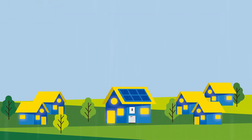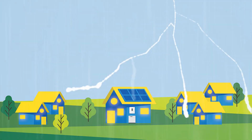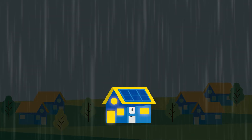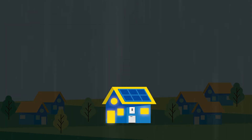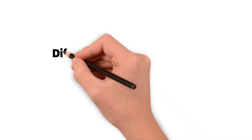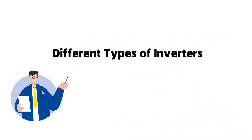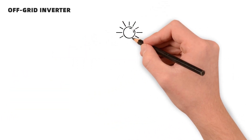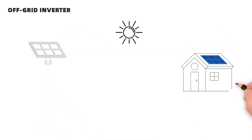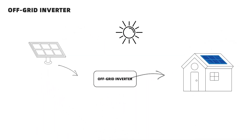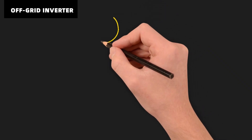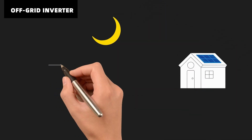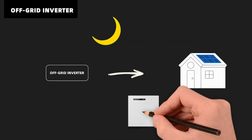During adverse weather conditions like thunderstorms, inverters ensure that household lighting and power usage remain unaffected, providing continuous power support to homes. An off-grid inverter operates independently without the need to connect to the grid. It converts the DC generated by solar panels into AC power directly supplied to household appliances.